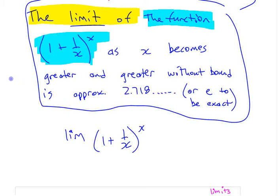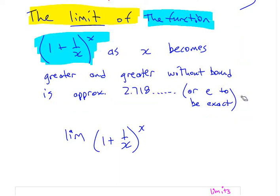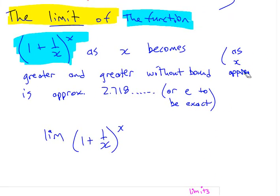The next part is as x becomes greater and greater without bound. The way you can say that is actually as x approaches infinity. You put an x here, you put an arrow, and you put an infinity symbol. And the limit is equal to what? The limit is not approximately that number, the limit is that number. It's e.